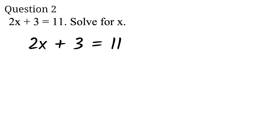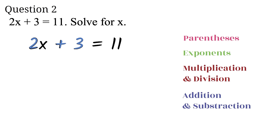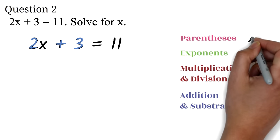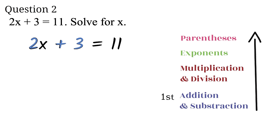We said earlier that the whole idea of solving equations is to get rid of everything and leave the x on one side of the equation. For this question, we will see that we have to get rid of the multiplication by 2 and the plus 3. Note that 2x is the same as 2 times x. When there are more than one operation, we use the reversal of the order of operations to know which one to get rid of first. In the reversal of the order of operations — that's from bottom to top — we have addition before multiplication.